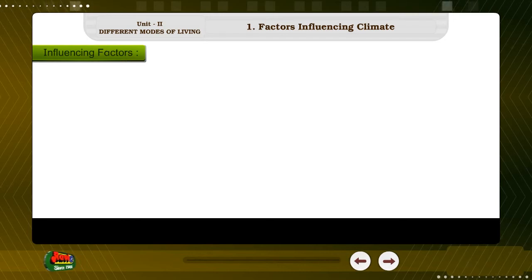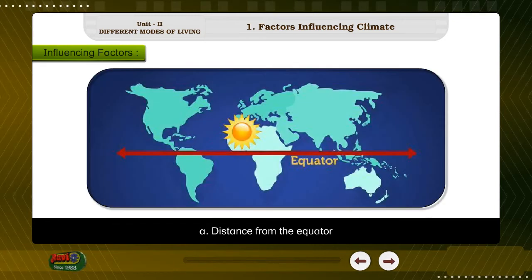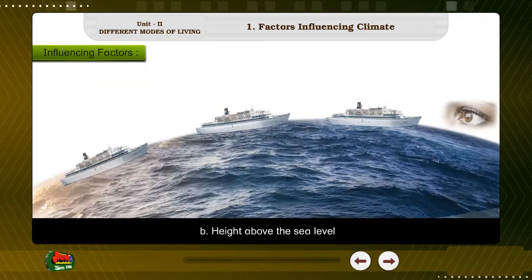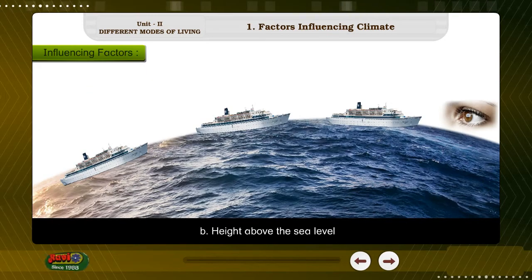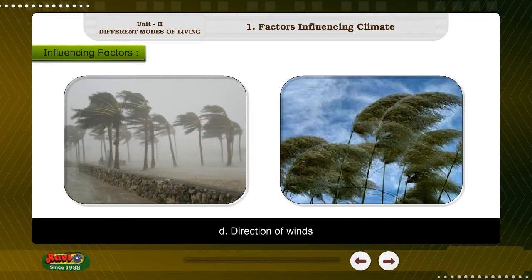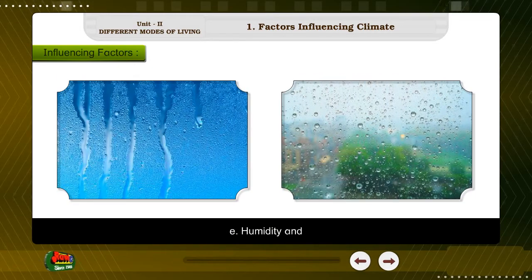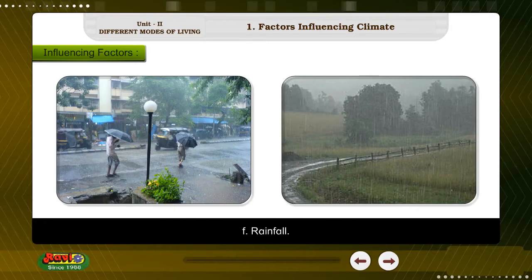The climate of a place is influenced by several factors. They are: A. Distance from the equator, B. Height above the sea level, C. Distance from the sea, D. Direction of winds, E. Humidity, and F. Rainfall.